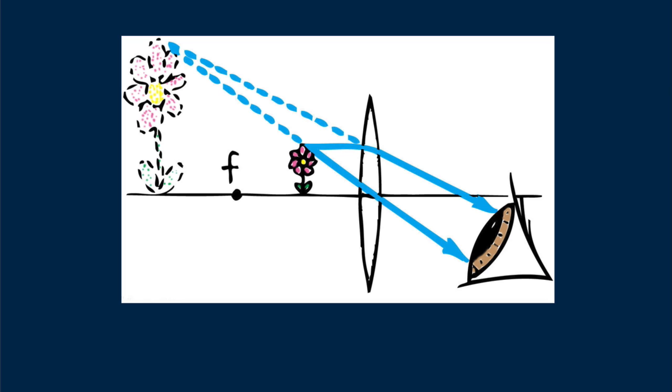If a screen is placed at the image distance, no image appears because no light is directed to the image position. The rays that reach your eye, however, behave as if they came from the image position. We call the result a virtual image. Here the eye sees an enlarged flower nicely magnified.